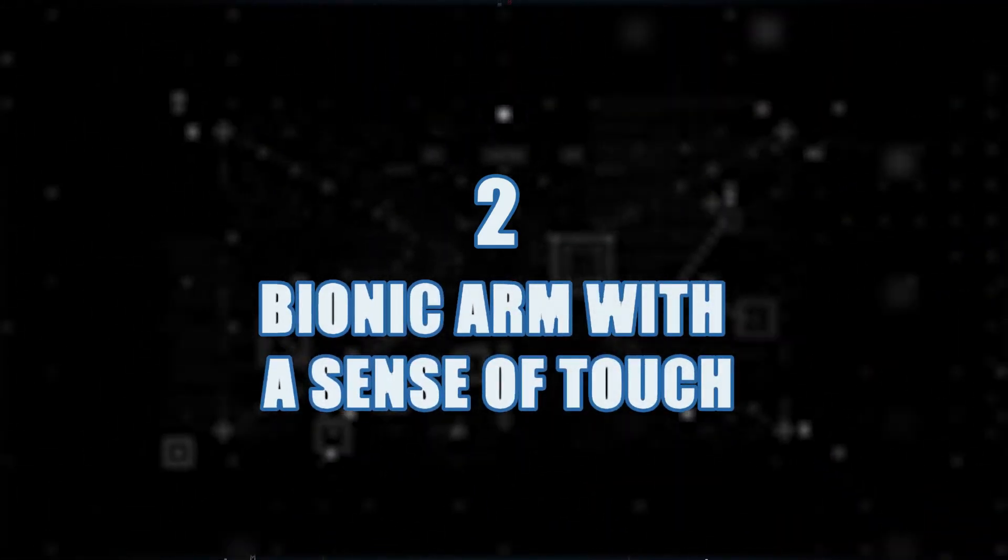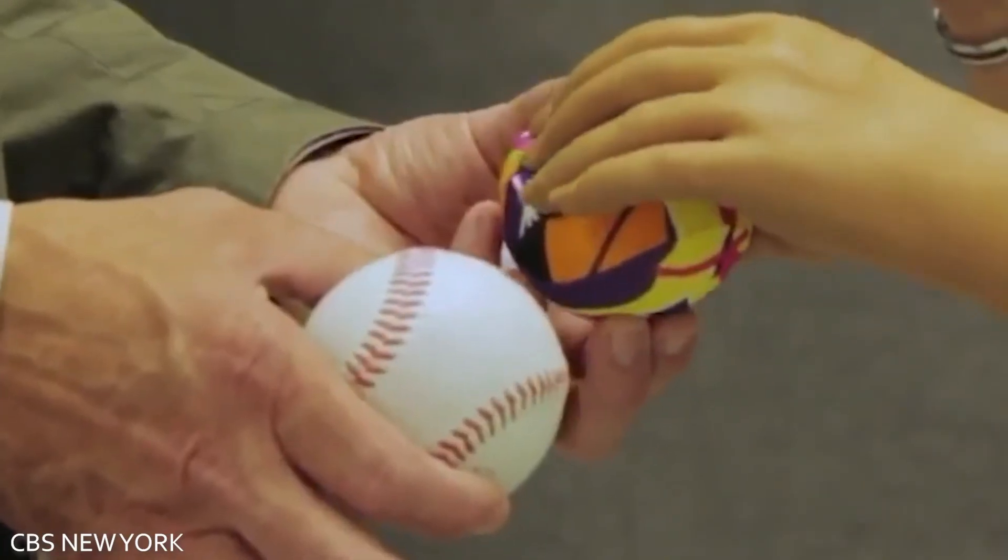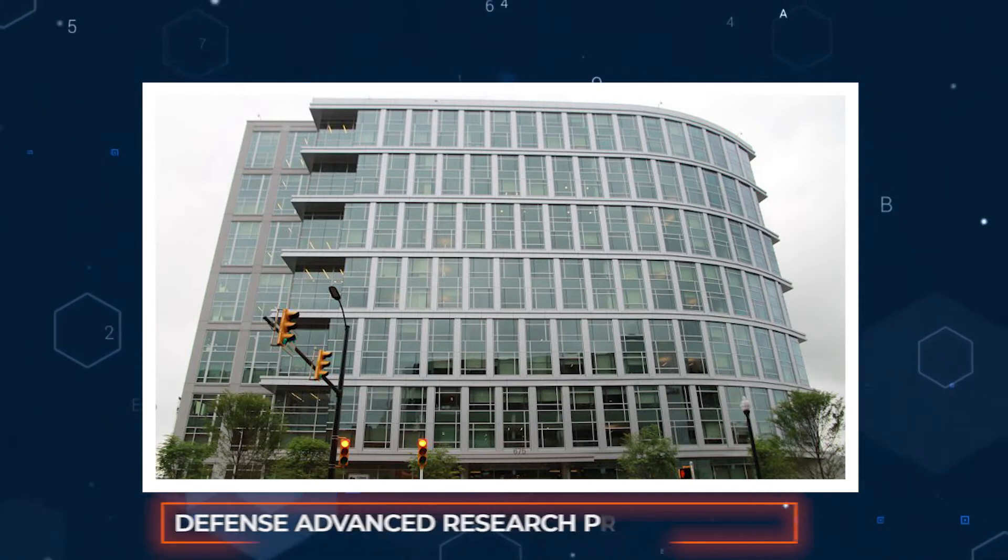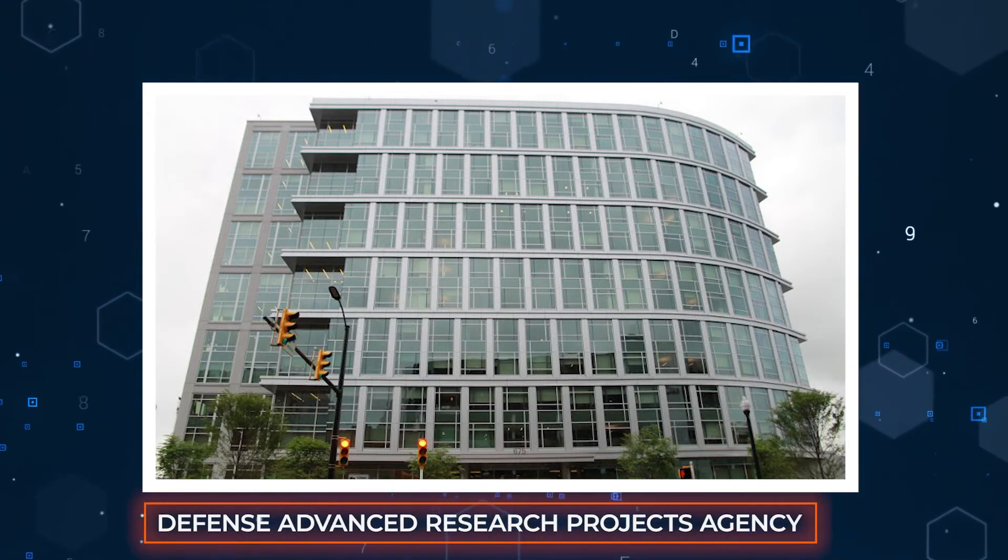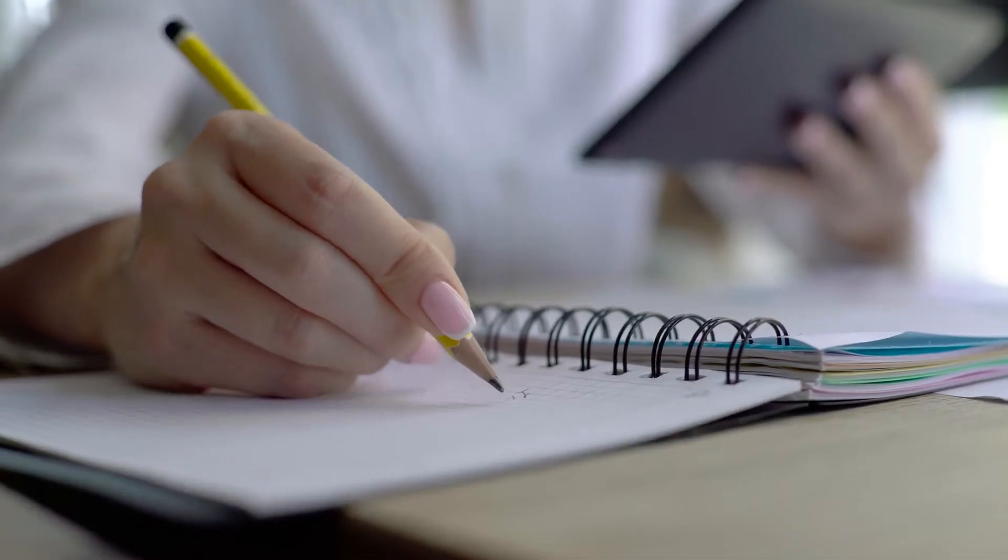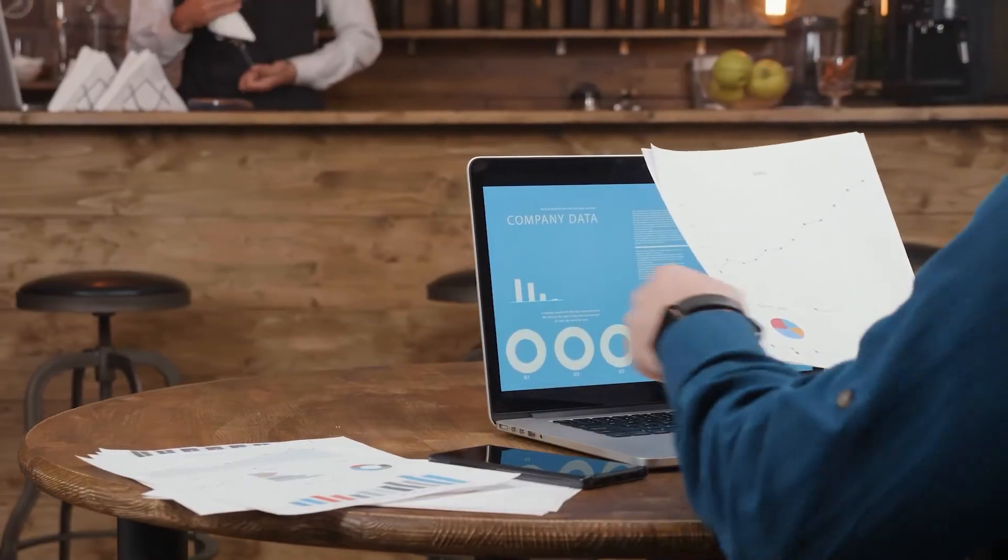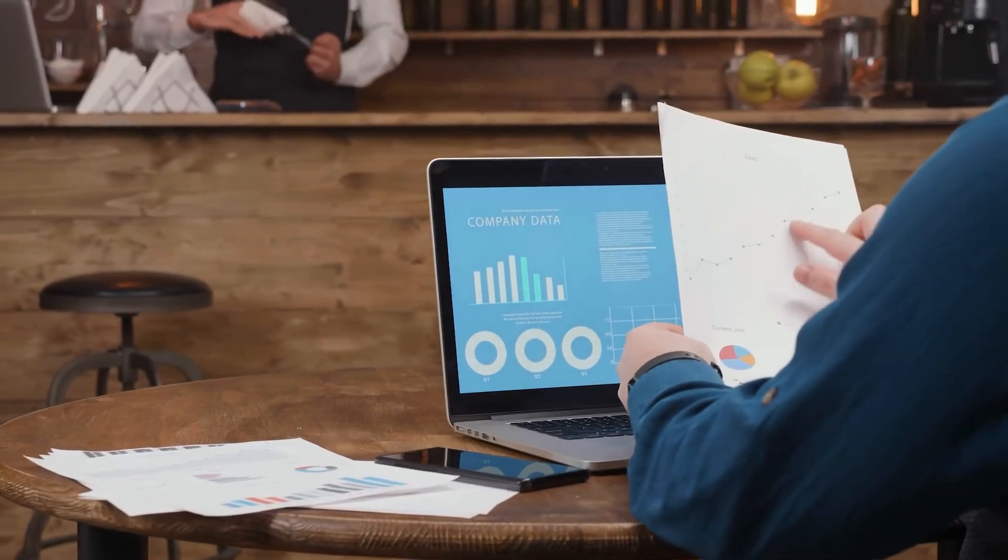Number 2. Bionic arm with a sense of touch. We sometimes take the sense of touch for granted. The Defense Advanced Research Projects Agency, or DARPA for short, has done a lot of research on prosthetics. Some of the company's most recent work has focused on making the wearables feel more natural, literally.